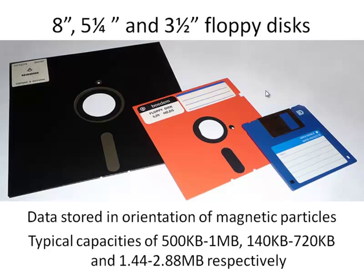Quite obsolete now, we looked at some of the floppy disk formats. Here we can see eight-inch, five-and-a-quarter-inch, and three-and-a-half-inch floppy disks. Three-and-a-half-inch floppy disks were still in regular use until probably around five or ten years ago. What these media all have in common is that inside them they have a flexible disk covered in magnetic particles — little tiny bits of iron filings, for example. Typical capacities of a three-and-a-half-inch floppy disk range from 1.44 megabytes to just under 3 megabytes.